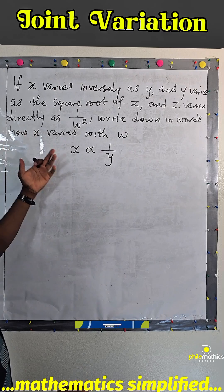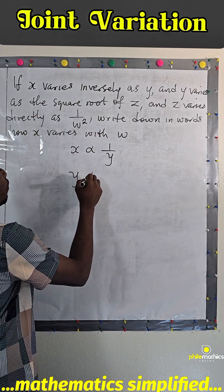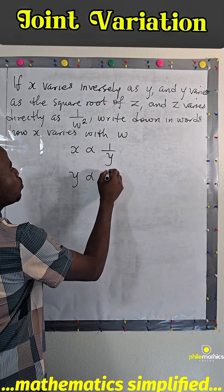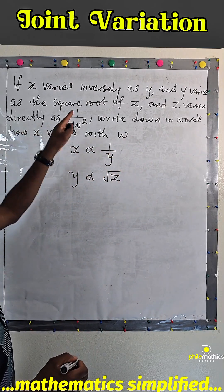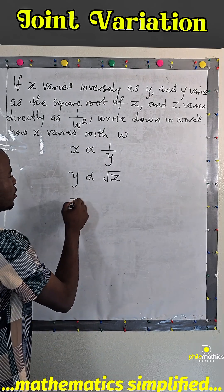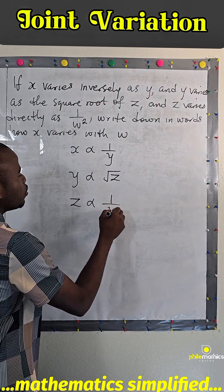And y varies as the square root of z, and z varies directly as 1 over w squared.